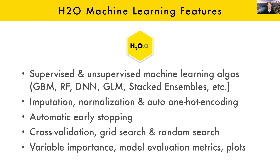We have everything that goes along with a machine learning library: cross validation, grid search, random search. We also do a lot automatically that you might typically have to write code for with scikit-learn. You don't have to impute your data, normalize your data, or encode your data — we handle that all natively. We have features built in for early stopping so you don't overfit, which is particularly important for GBMs or deep neural networks. Every model has variable importance, the same metrics available, and plots. It's a unified interface to a whole bunch of algorithms.